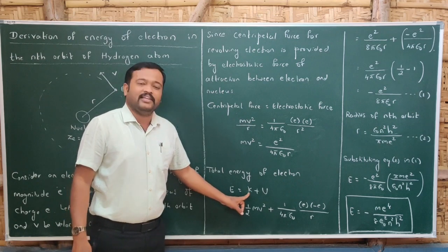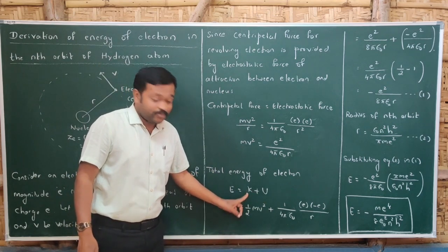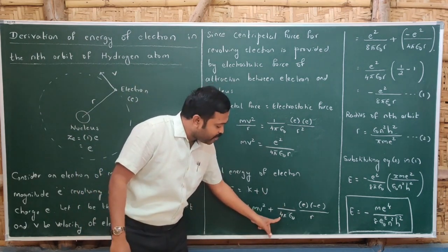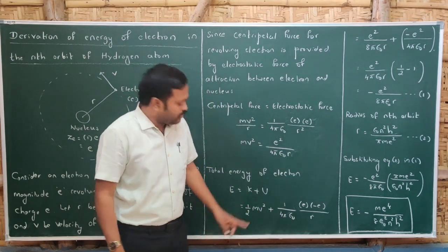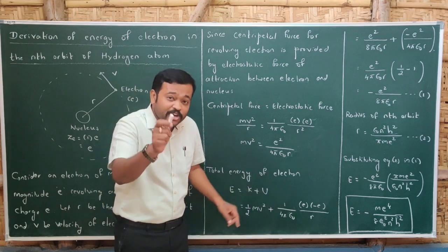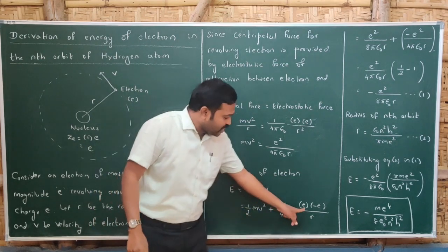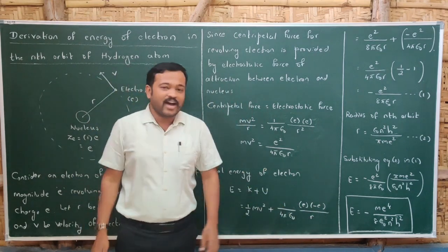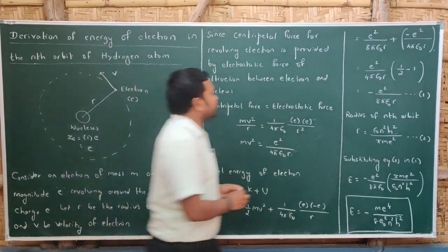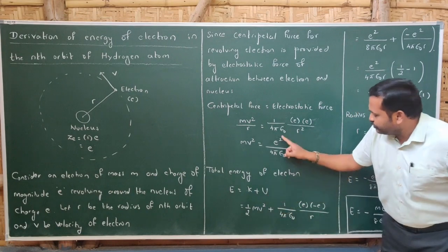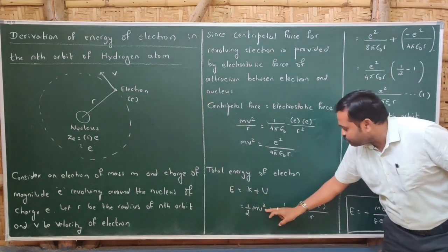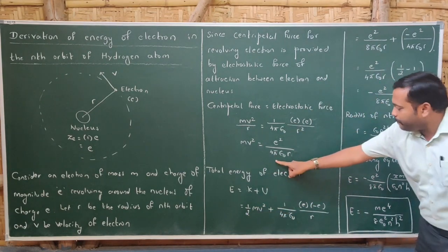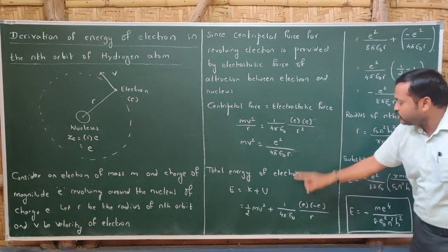Now let us take the total energy E of the electron, which equals kinetic energy plus potential energy. Kinetic energy is ½mv². The potential energy from electrostatics is 1/(4πε₀) times the product of the charges — the charge of the nucleus is +e and the charge of the electron is -e — divided by distance r. Substituting mv² = e²/(4πε₀r), the kinetic energy becomes e²/(8πε₀r).